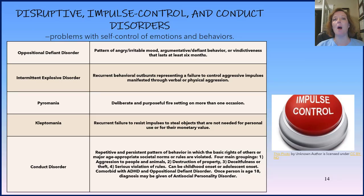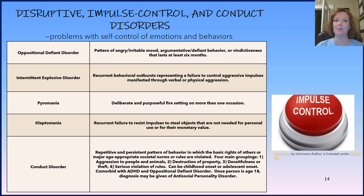Now let's talk about some other disorders. On your screen you see some connected disorders called disruptive impulse control and conduct disorders. All of these disorders have some type of problem with self-control of emotions or behaviors. They include oppositional defiant disorder, intermittent explosive disorder, pyromania, kleptomania, and conduct disorder. You might want to pause the video here so that you can read through the chart.